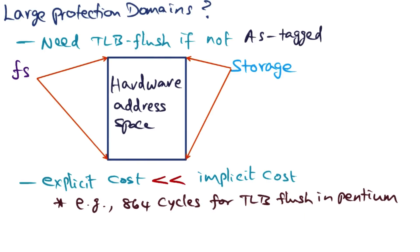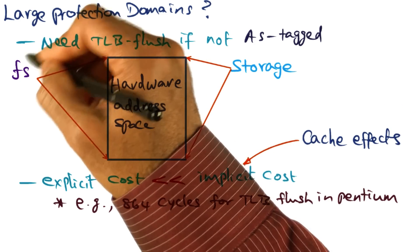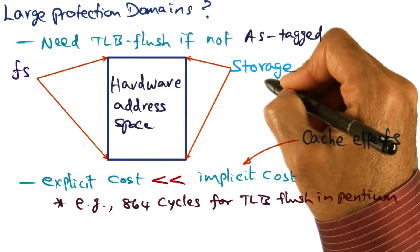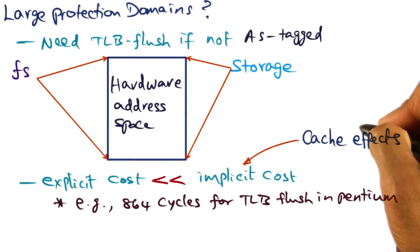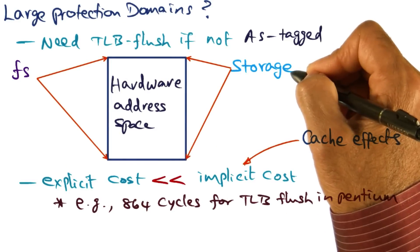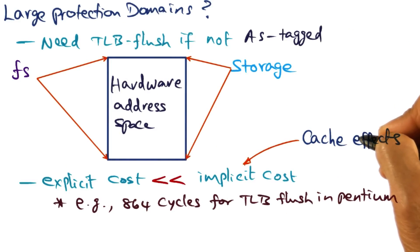Now what do we mean by implicit cost? We mean cache effects. That is, the loss of locality going from this service to this service. The cache is not going to have the working set of this service when we go from here to here. That impact is much more than the explicit cost.